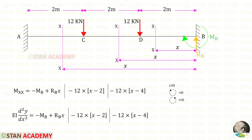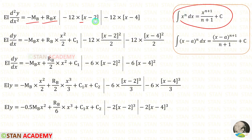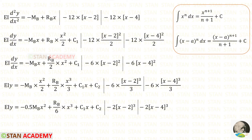Now let us equate MXX with EI d²y/dx². Let us integrate this equation. When we integrate d²y/dx² we get dy/dx. For integrating the first two terms we use one formula, and for integrating (X minus 2) and (X minus 4) we use the Macaulay bracket formula. When we integrate minus MB we get minus MB·X. When we integrate X we get X²/2. When we integrate (X minus 2) we get (X minus 2)²/2, and (X minus 4) gives (X minus 4)²/2. C1 is the constant. 12 divided by 2 gives 6.